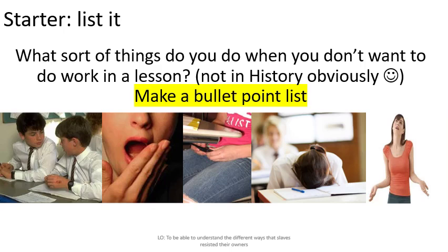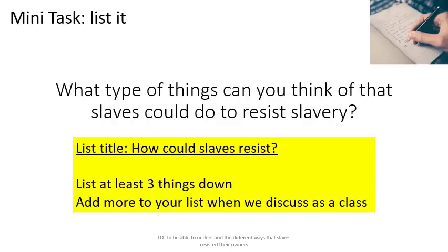Now take what you just came up with — the things you might do to resist working in a lesson — and apply that back to slavery. What types of things could slaves have done to resist slavery? Think about their day-to-day work and the sorts of things that they did. Give it a title 'How Could Slaves Resist?' and list at least three things. Add things to your list as others suggest different ideas.